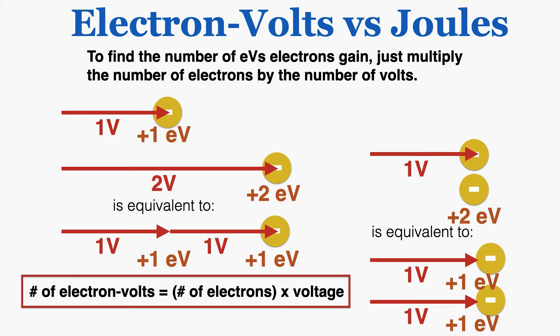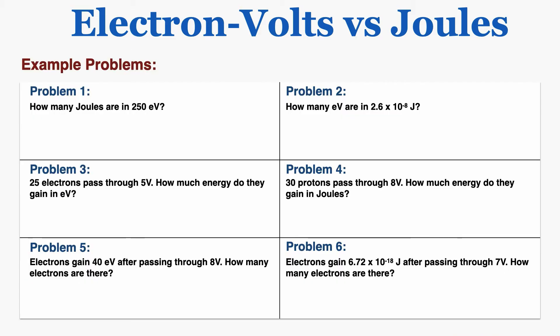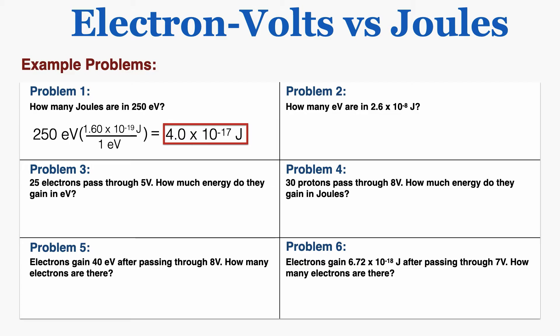Now I'm ready to do some example problems. Problem one asks: how many joules are in 250 electron volts? This is a straightforward unit conversion. Using a factor label, I put electron volts in the denominator and joules in the numerator, with numbers that make the two equal. If you're unsure about converting units, I've linked a video in the description. Multiplying out gives 4.0 times 10 to the negative 17th joules — that's how many joules are in 250 electron volts.